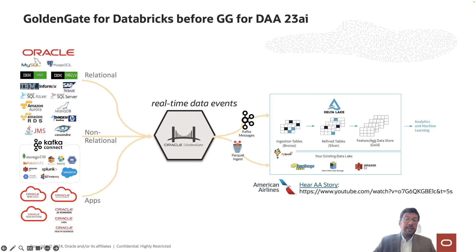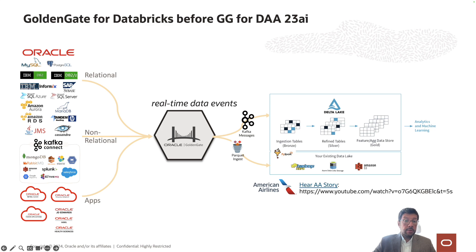Data fabric replication has been the most common use case for GoldenGate customers. There are many customers already using GoldenGate for delta lake ingestions. The same customers used GoldenGate for ingesting messages into delta lakes through Kafka or through cloud storage services. In the case of Kafka, customers stream change data into Kafka topics using GoldenGate and use sync processes for writing into delta tables.